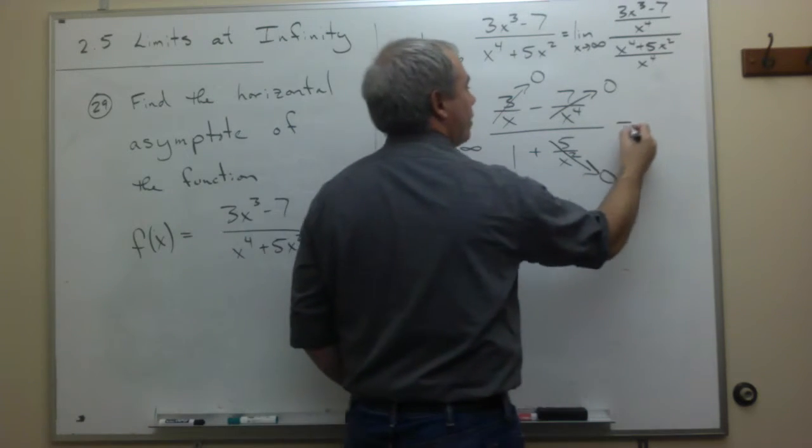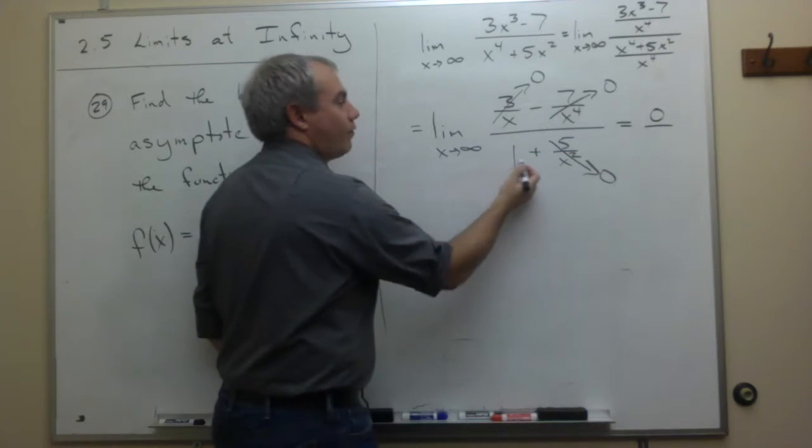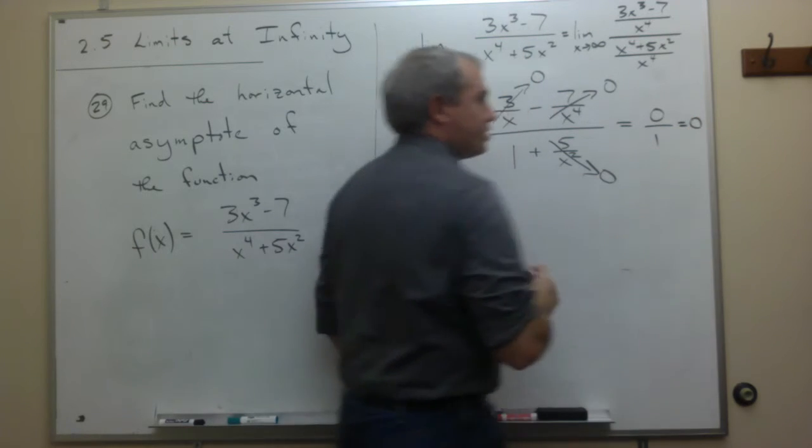So what are we left with? On top I have 0 minus 0, which is 0. And on bottom I have 1 plus 0, which is 1, or 0 over 1, which is 0.